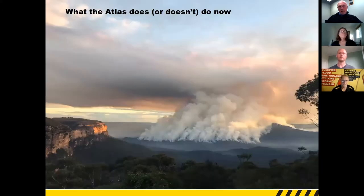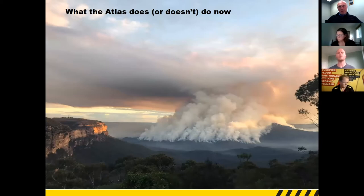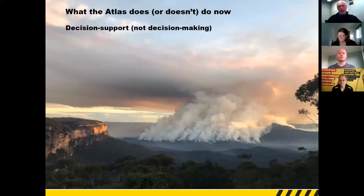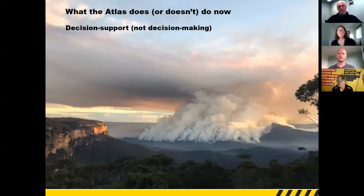I'll very quickly summarize what the Atlas does now and what it doesn't do. It is a decision support tool or system — it doesn't make decisions. Managers and policymakers are responsible for making decisions. The Atlas, particularly through its comparative insights, provides an informed basis for making decisions. But in the end, decisions are still made about values, choices and constraints. It may help people make better and better-informed decisions, but it does not make the decision for you.